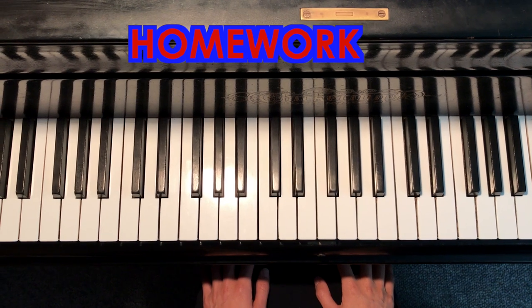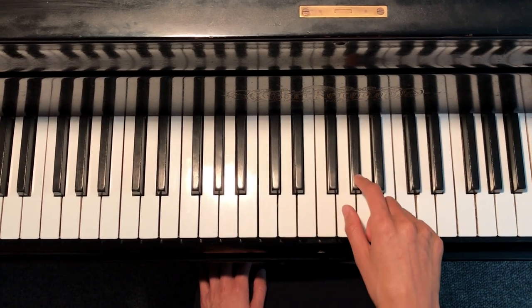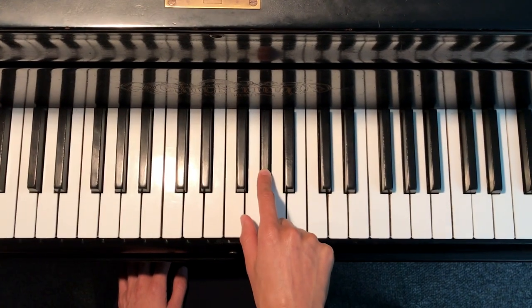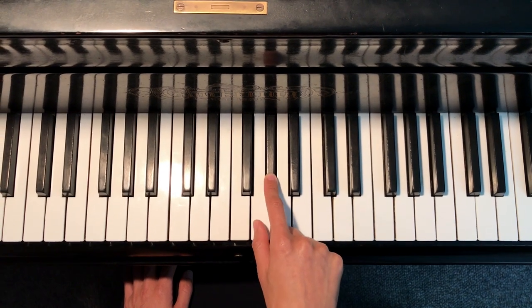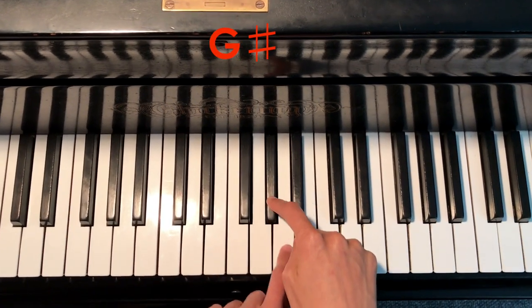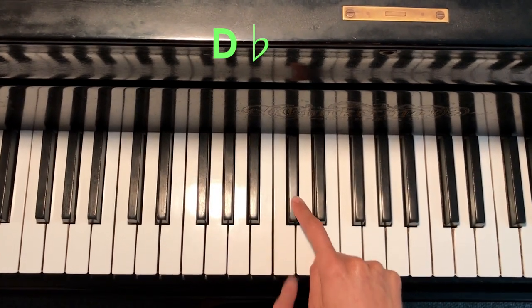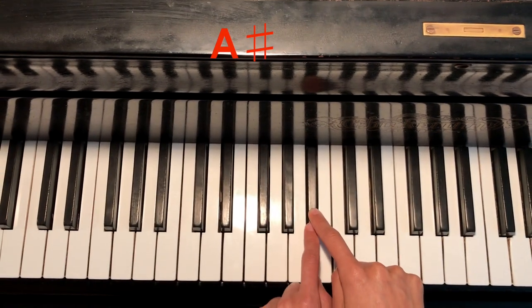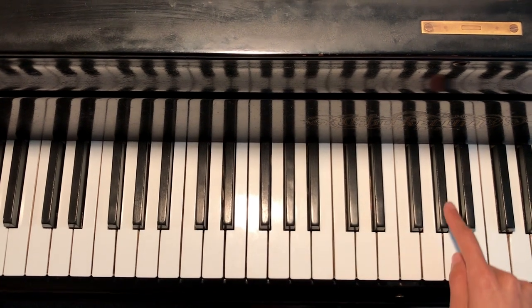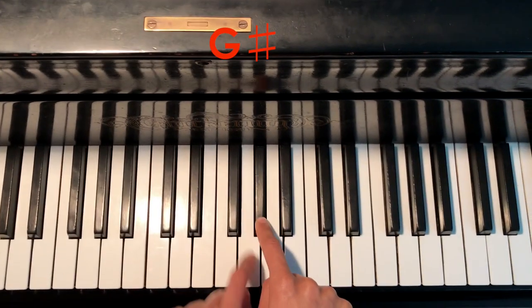Some homework you can do is to find a random black key and name its sharp and flat name. For example, this could be G sharp, but it also could be A flat. This is C sharp, but it's also D flat. This is A sharp, but it's also B flat. This is G sharp, but it's also A flat.